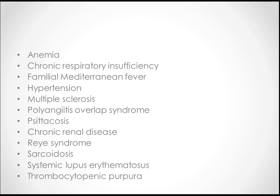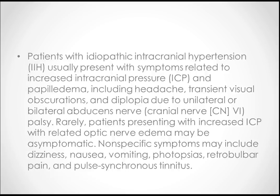Other associated conditions include Reye syndrome, sarcoidosis, systemic lupus erythematosus, and thrombocytopenic purpura. Patients with IIH usually present with symptoms related to increased ICP, including papilledema and headache — headache is the most common feature. Additional symptoms include transient visual obscuration and diplopia due to unilateral or bilateral abducent nerve involvement.